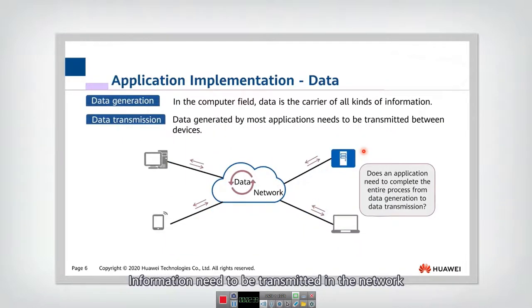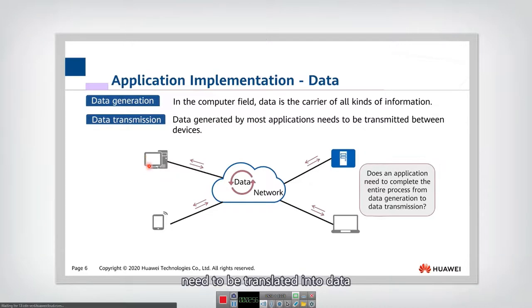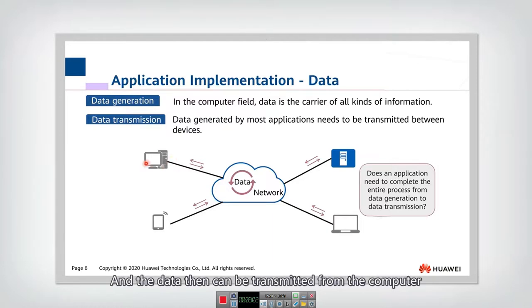Information needs to be transmitted in the network. But the computer or network can only identify the zero or ones. So actually, the videos, the text, this kind of information need to be translated into data, which only include zero and ones. And the data then can be transmitted from the computer through the network to another computer or another server. So actually, that is data transmitted in the networks.